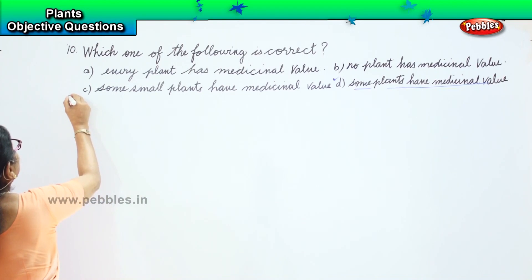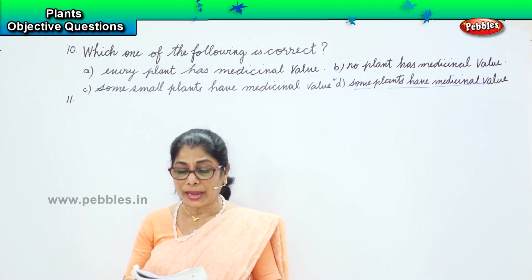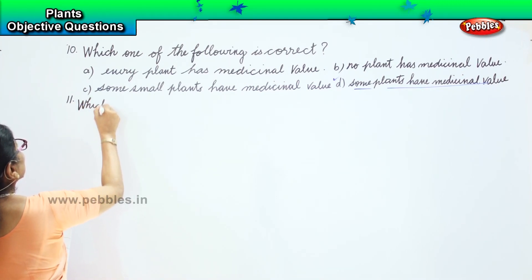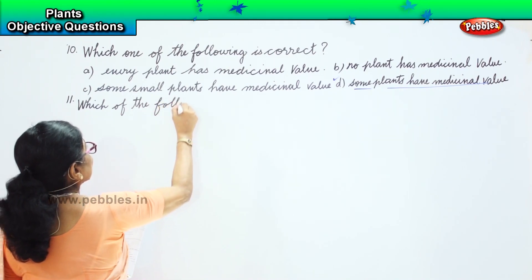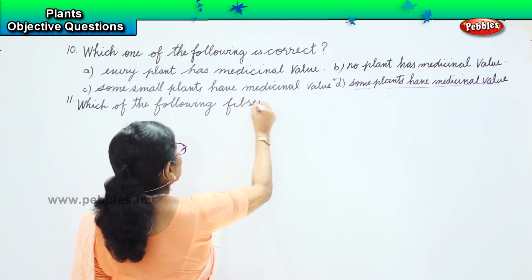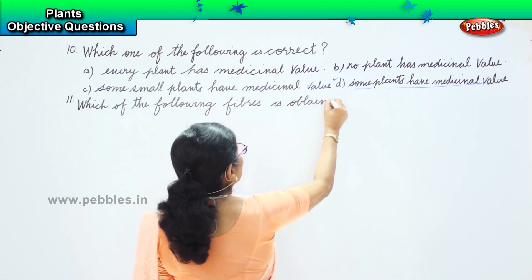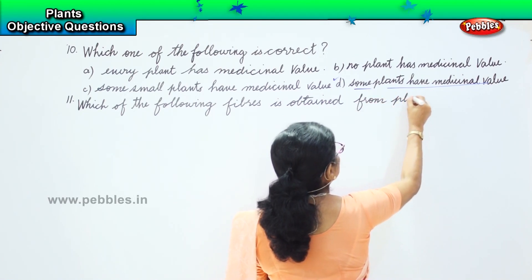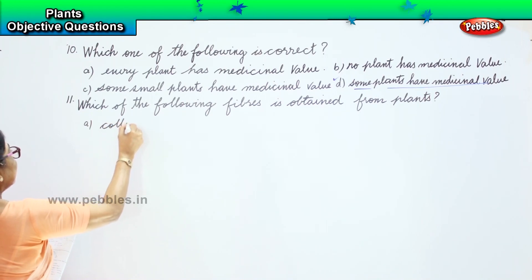The 11th question is: which of the following fibers is obtained from plants? Your options are: option A - cotton, option B - silk, option C - jute, option D - both A and C.